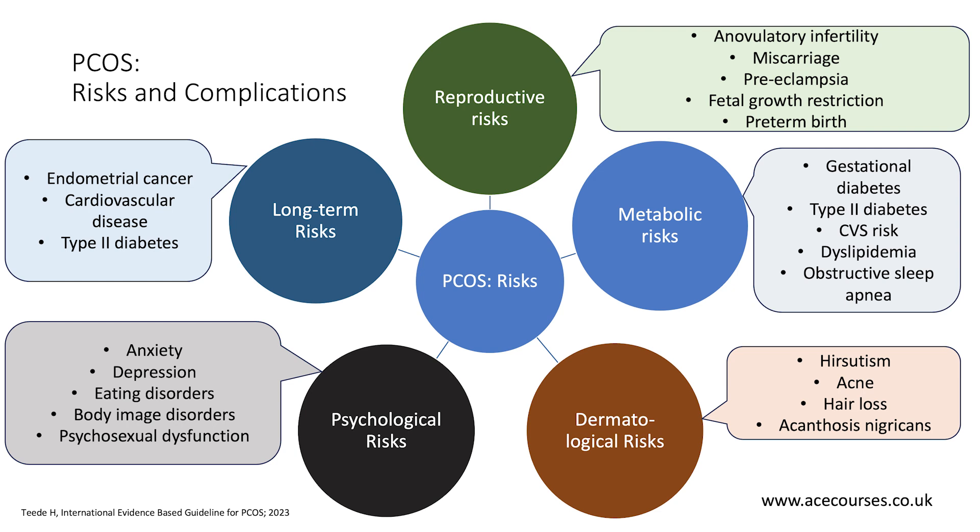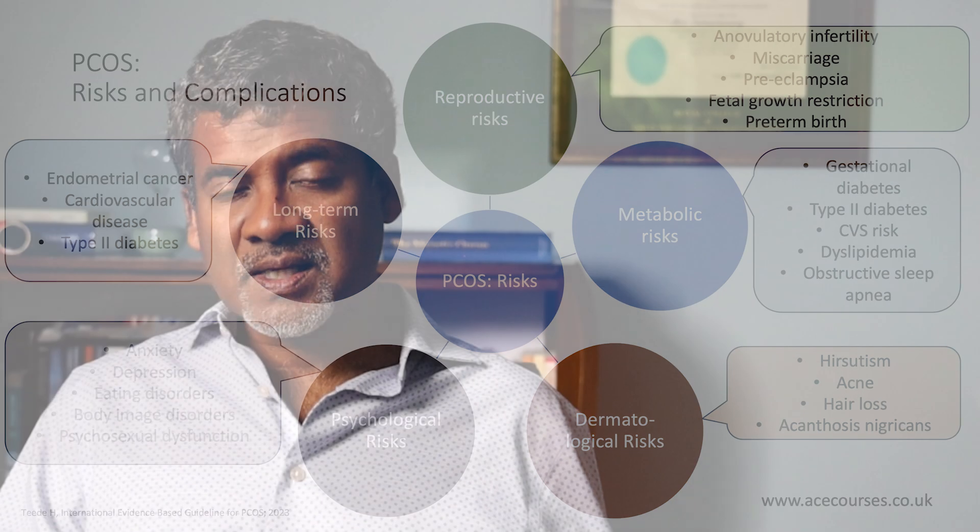Moving on to type 2 diabetes: because of this risk, any patient diagnosed with polycystic ovary syndrome should have their glycemic status checked at diagnosis and then every one to three years depending on the clinical history. The recommended test is the 75-gram oral glucose tolerance test or GTT, as this is the most accurate test. If it can't be performed, fasting glucose or HbA1c can be considered.